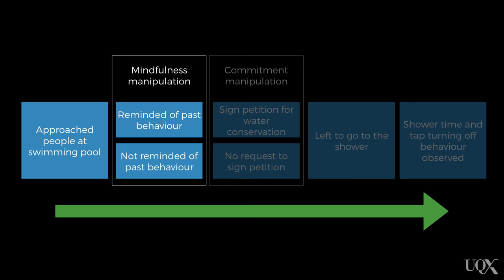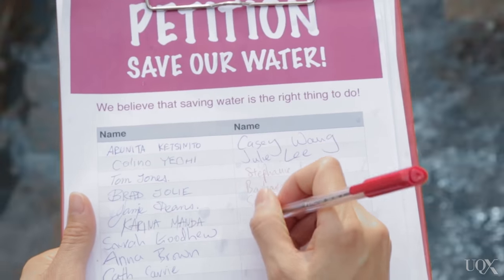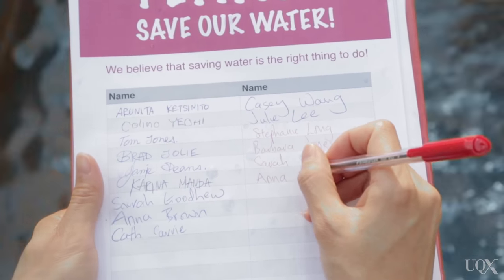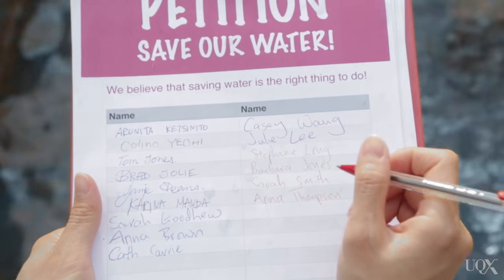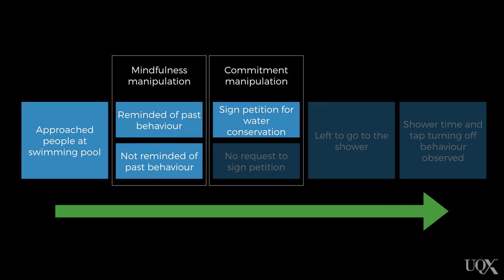Some of the other participants were not reminded of their past behaviour related to using water. Half of the participants were asked to make a public commitment to their attitude about saving water by signing a petition advocating for people to take shorter showers and save water. They were told this petition would be displayed around the neighbourhood so everybody could see their support for saving water. The other half were not asked to sign the petition and so did not make a public commitment.